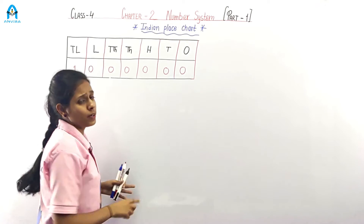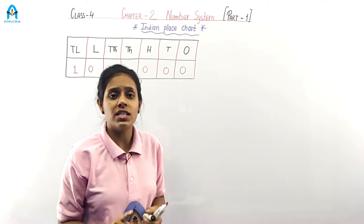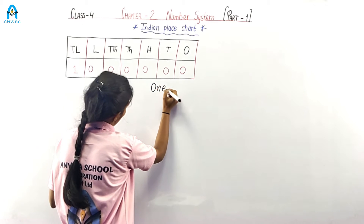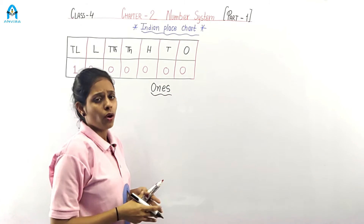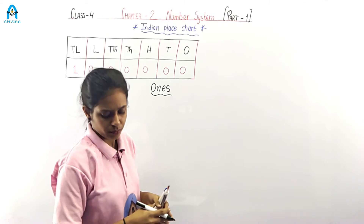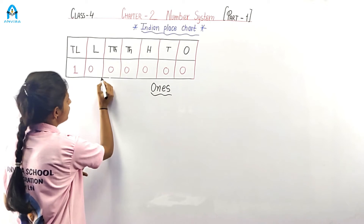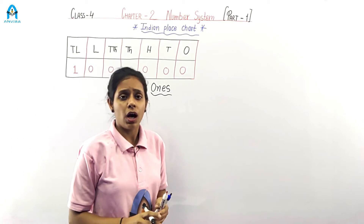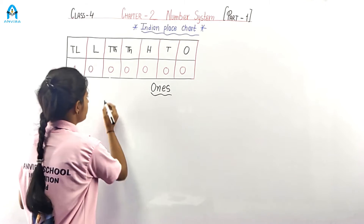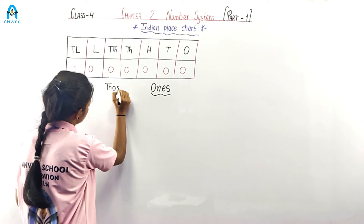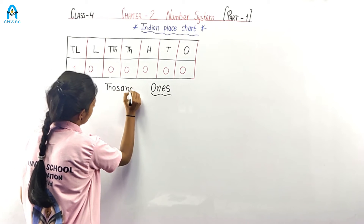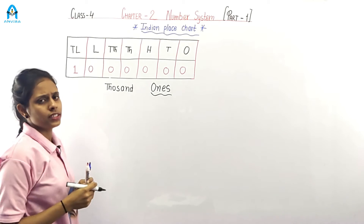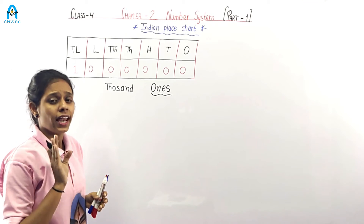Now let's classify this place chart. The first three places — ones, tens, hundreds — make the ones period. The next two places — thousands and ten thousands — make the thousands period. The next two places make the lakh period.